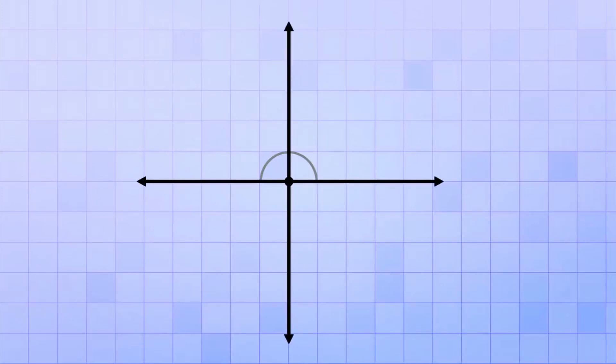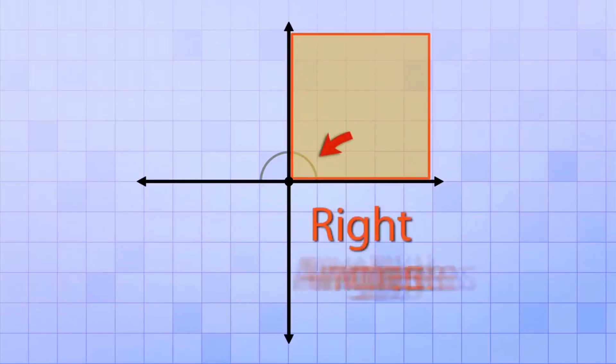Perpendicular lines are lines that form a square corner when they intersect. And this square corner angle has a special name in geometry because it's really important. We call them right angles.